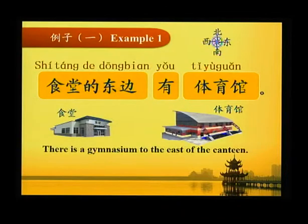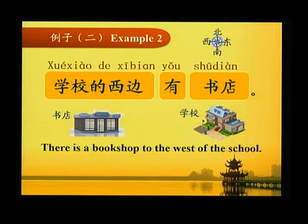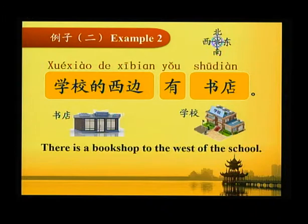例子一 Example one: 食堂的东边有体育馆 — There is a gymnasium to the east of a canteen. 例子二 Example two: 学校的西边有书店 — There is a bookshop to the west of a school.